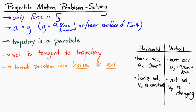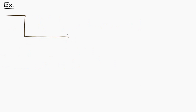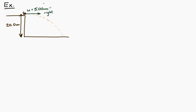That's the background conceptual information we're going to use to solve problems. Let's put it into practice. We're going to throw an object horizontally from a cliff — let's make the cliff 20 meters high. The ball is thrown 20 meters above the bottom of the cliff, horizontally at 5 meters per second to the right. Here's the trajectory — this is still projectile motion because after it leaves the person's hand, the only force acting is gravitational force. This is definitely part of a parabola.